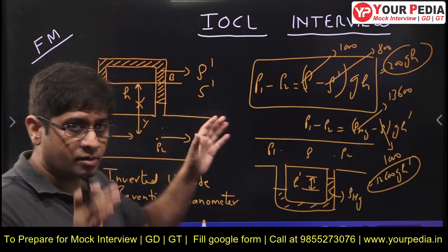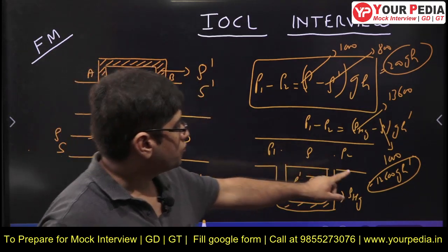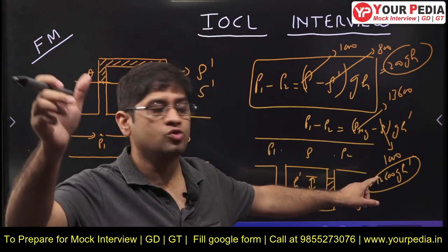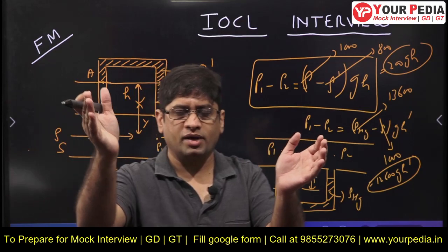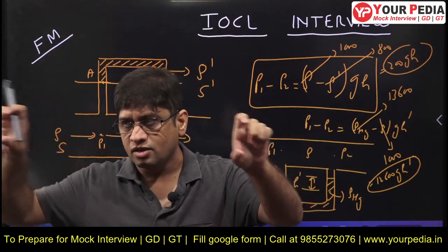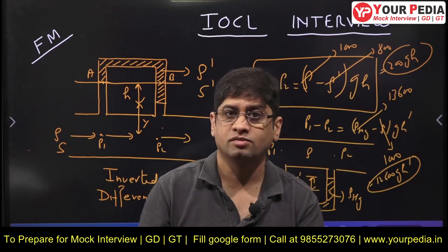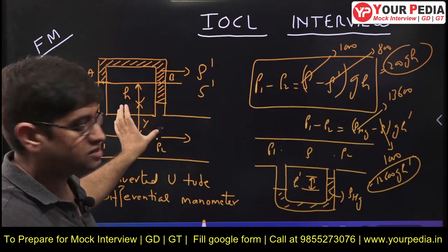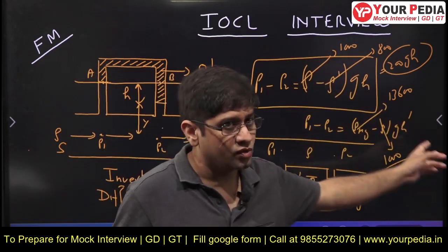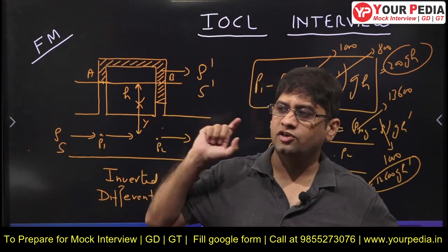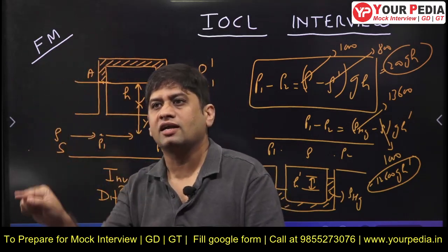Now compare: 200*g*h versus 12,600*g*H_dash. If the pressure difference P1 minus P2 is large, use a U-tube manometer — the mercury column H_dash stays manageable. But if the pressure difference is very small, using a U-tube manometer gives a very small h that is difficult to observe accurately. In that case, use an inverted U-tube manometer, because a small pressure difference produces a significant, readable column height h.